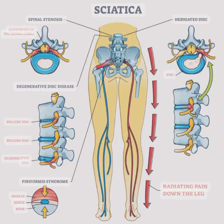Here are some facts about sciatica. Definition: Sciatica refers to a painful condition that occurs when the sciatic nerve, which is the longest nerve in the human body, becomes irritated or compressed.